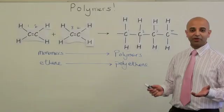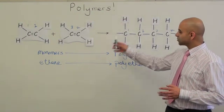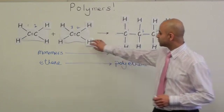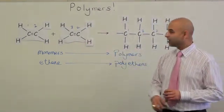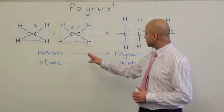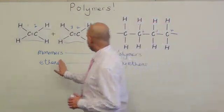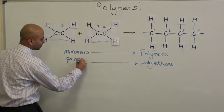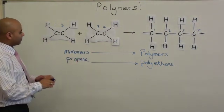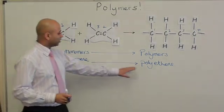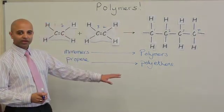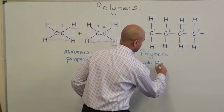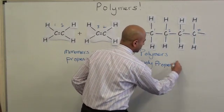Another example you may come across is where they haven't just got hydrogens on, but they start changing the groups — replacing the hydrogens and putting other groups in. Another common example is not using ethene anymore but using propene. As the name suggests, you just put poly in front of it — it's not polyethene anymore, it's polypropene.